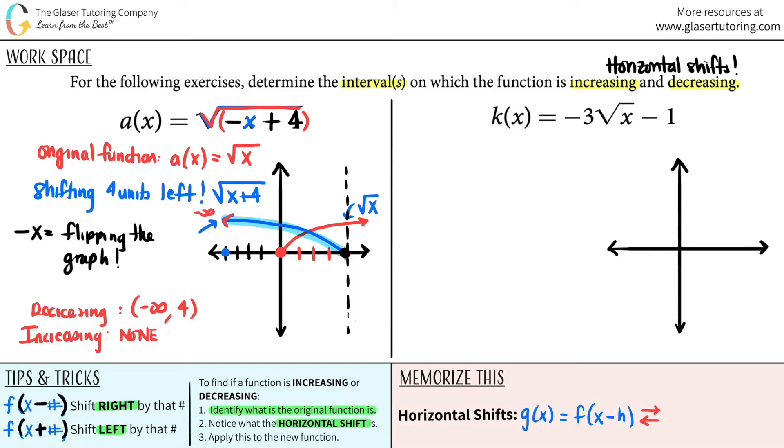Now let's try to do the same thing for this one. So always start with number one, identify what the original function was. Strip away all the big numbers and only go for what the x is being done to it. So here I got a square root of x. I don't care that it's multiplied by three. I don't care that it's negative one.